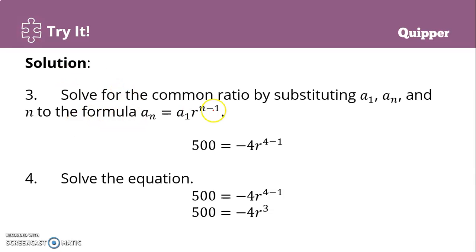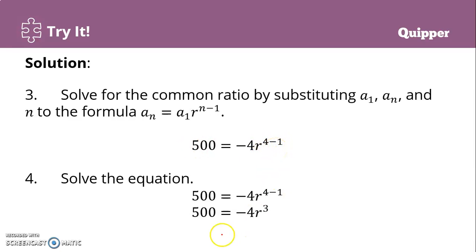Next, solve for the common ratio by substituting a sub 1, a sub n, and n into the general term of the geometric sequence. So a sub n equals 500, a sub 1 is negative 4, and n minus 1 is 4 minus 1 equals 3. This gives us 500 equals negative 4 times r raised to the 3rd power.